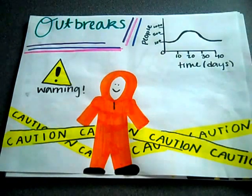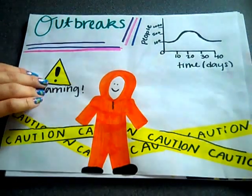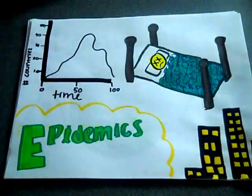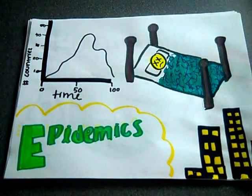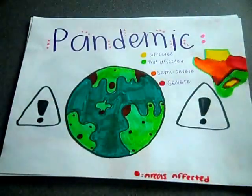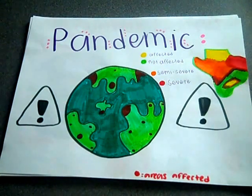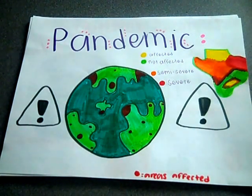An outbreak is a term used to describe a sudden rise in the occurrence of a disease. An epidemic is a widespread occurrence of a disease, a step up from an outbreak. A pandemic is an occurrence of a disease throughout an entire country, or sometimes the entire world. This is a step up from an epidemic.